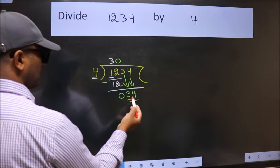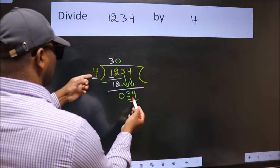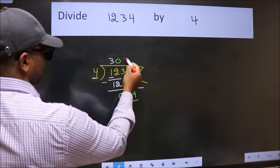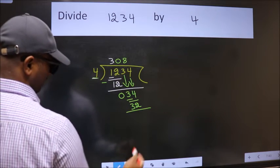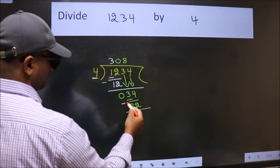So 34. A number close to 34 in the 4 table is 4 times 8, 32. Now we subtract. We get 2.